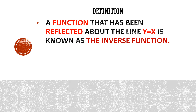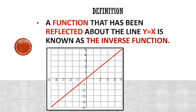A function that has been reflected about the line y equals x is known as the inverse of a function. So if we reflect a graph about the line y equals x, then the resulting graph will be known as the inverse of a function. Take a look at this line y equals x — it is this red line here. Whenever you reflect through it, whatever you get will be known as the inverse of that thing you reflected.